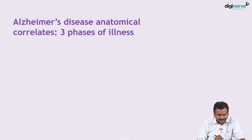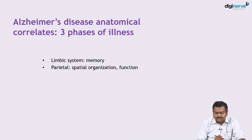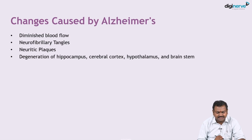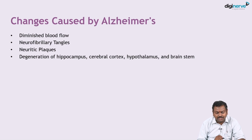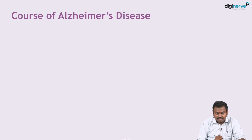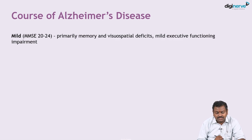Anatomically, Alzheimer's disease correlates to three phases: first, the limbic system where memory is affected; second, the parietal lobe affecting spatial organization and function; and finally, the frontal lobe where behavior is affected. Pathological changes include diminished blood flow, neurofibrillary tangles, and amyloid neuritic plaques. Biopsy reveals degeneration of the hippocampus, cerebral cortex, hypothalamus, and brainstem.